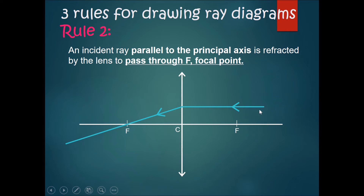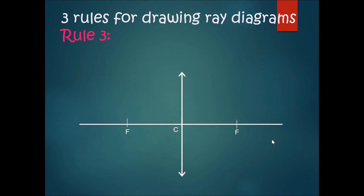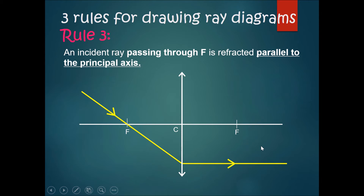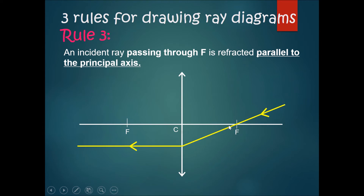This also works in the opposite direction — if a ray comes in parallel to the principal axis from the other side, it will bend and go through the focal point and continue on. Note that there are two focal points, one on the left and one on the right, and they are the same distance on each side — for example, if one focal length is 10 cm, the other is also 10 cm. The third rule is that any incident ray that passes through F and hits the lens will then become parallel to the principal axis.